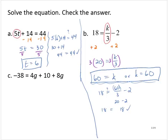Exercise C. Negative 38 is equal to 4g plus 10 plus 8g. Notice in this equation, we have two variable terms on the right hand side of the equation. And since they are like terms,